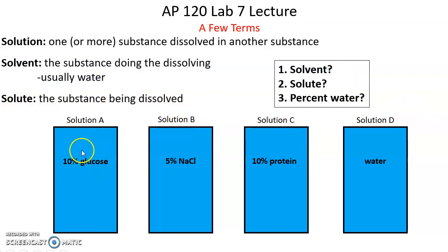So you should be able to tell me about the solvent, the solute, and percent water. So for instance, A, the solvent is water, the solute is glucose, percent water is 90%. 100 minus the 10% glucose leaves 90%. Sodium chloride, protein, and then this one is the trick question. This is not a solution. It is only pure water.